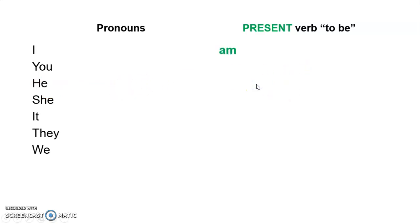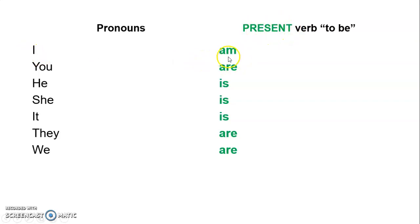So: I am, you are, he is, she is, it is, they are, we are. Y eso es cuando estamos hablando del presente. Entonces si yo digo 'I am happy,' yo estoy feliz ahora, en este momento, en el presente.